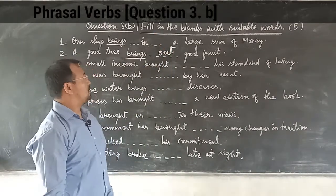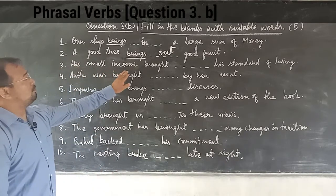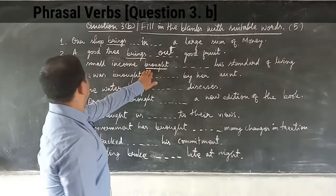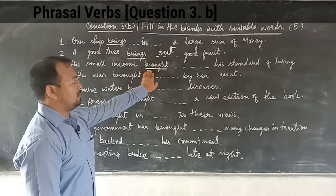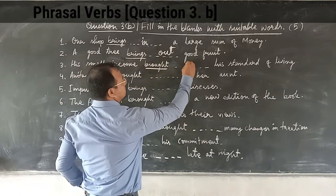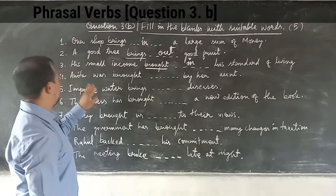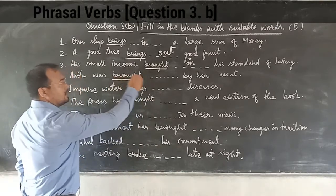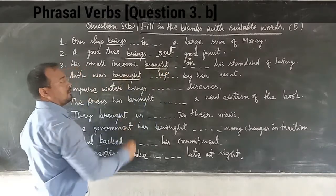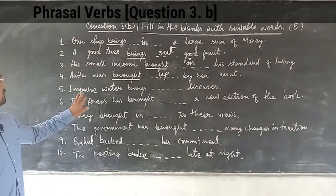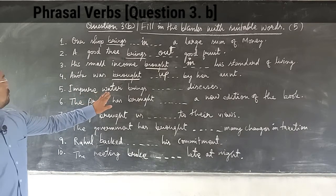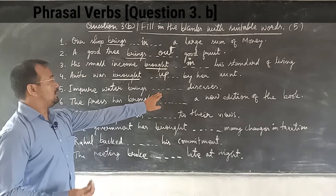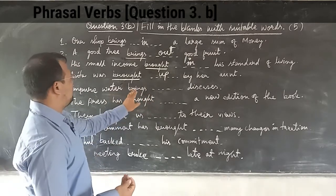Next: 'A small income brought ___ his standard of living.' Because of the income, the standard of living changed — so the preposition here is 'in', making it 'brought in his standard of living'. Next: 'Anita was brought ___ by her aunt.' As explained, 'brought up' means looked after, so the answer is 'brought up'. Next: 'Impure water brings ___ diseases.' The appropriate preposition is 'forth' — 'brings forth' — meaning disease has spread because of impure water.